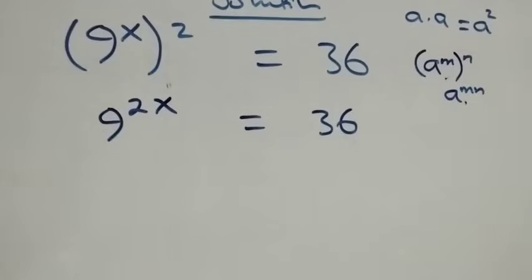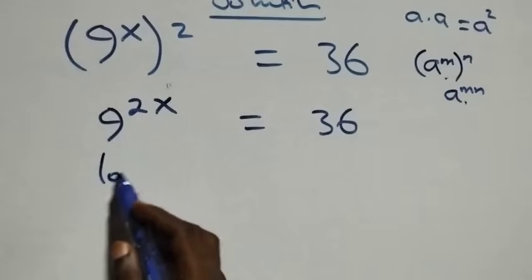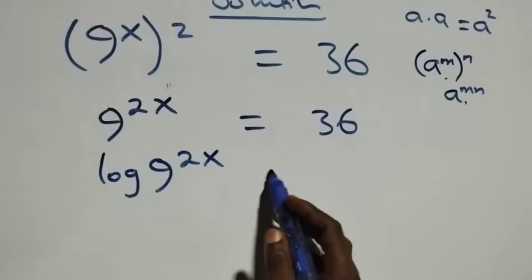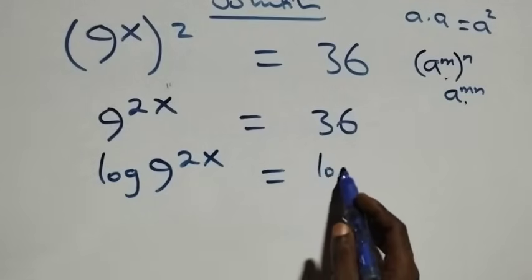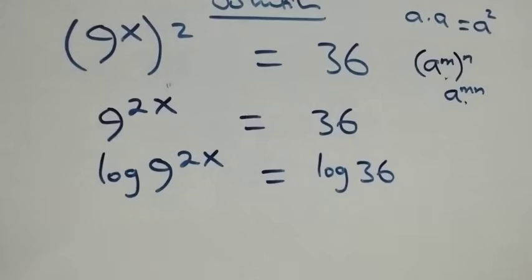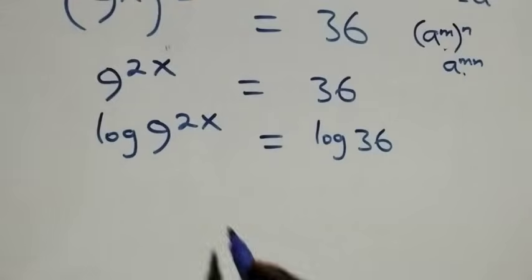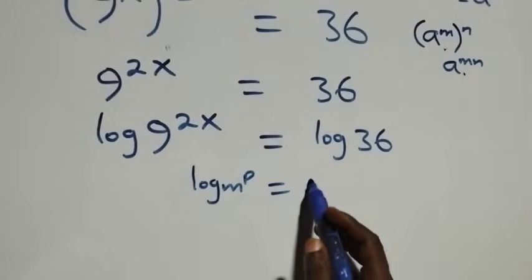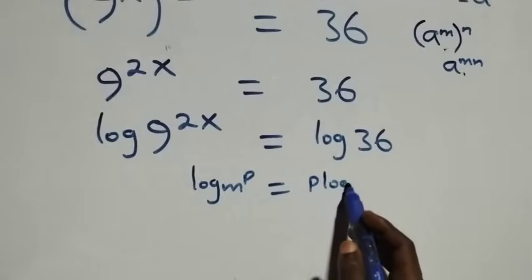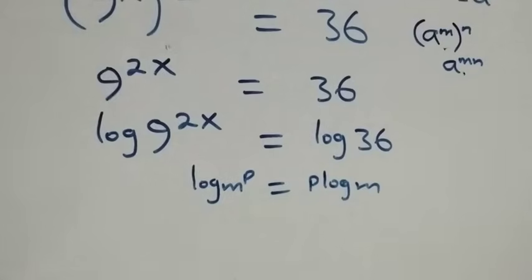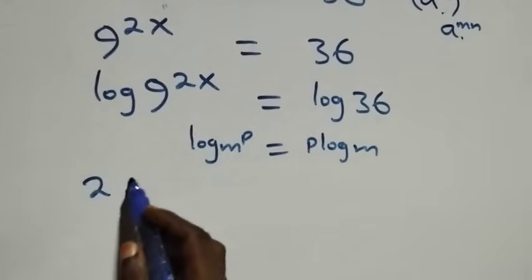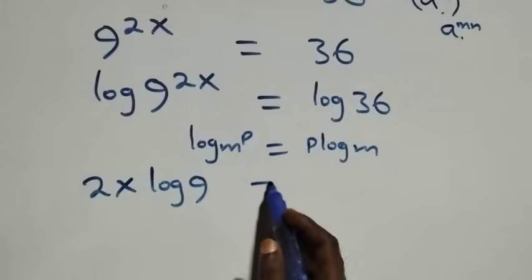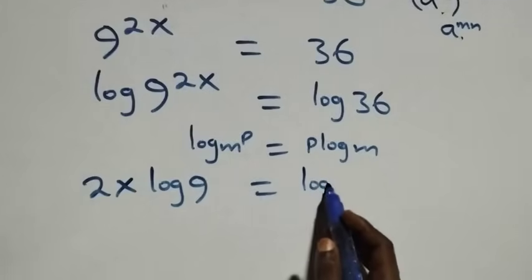The next step is to take the log on both sides. That is, we have log of 9 raised to power 2x equals log of 36. From here we apply the power rule of logarithms: log of m raised to power p is the same as p times log m. So this becomes 2x log 9 equals log 36.